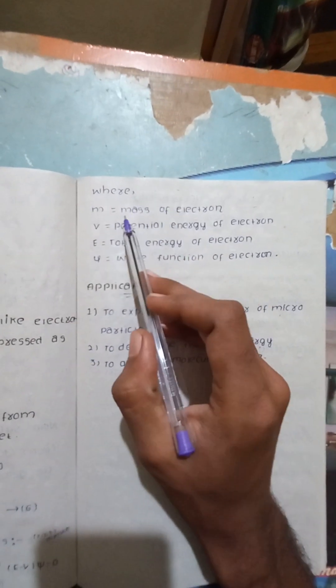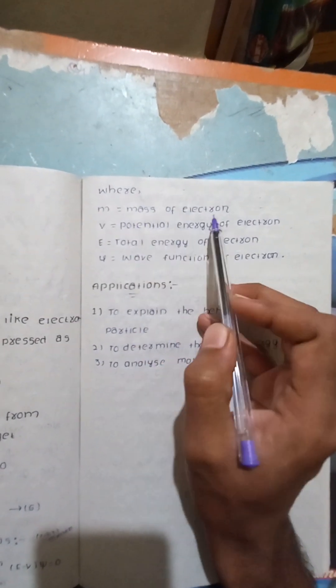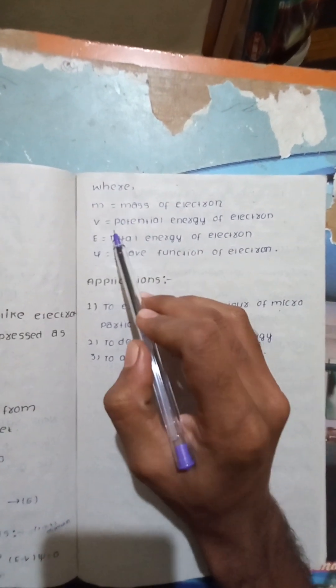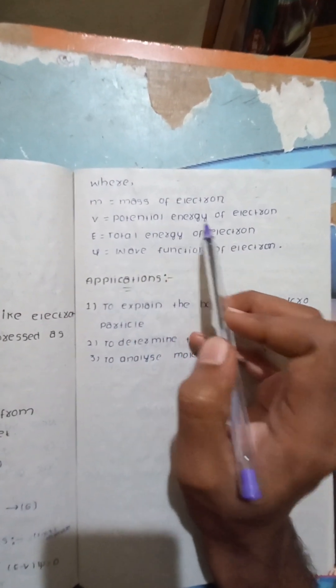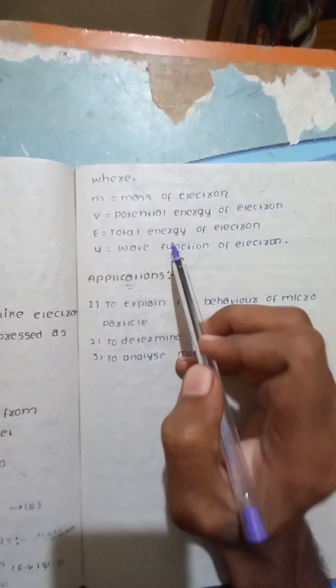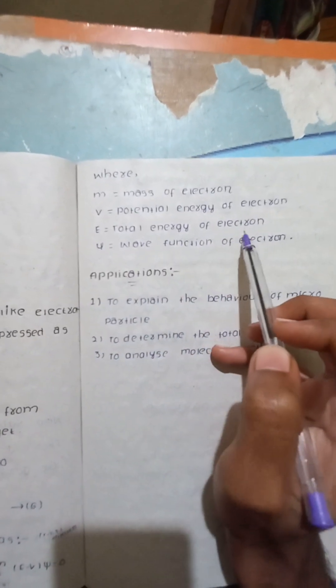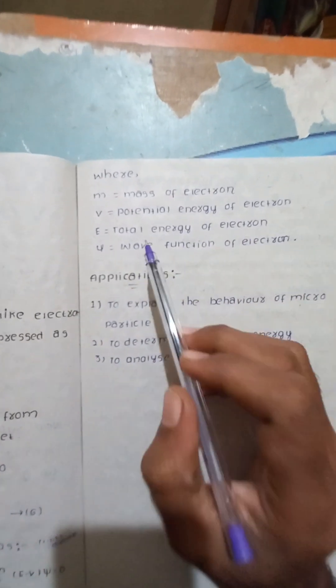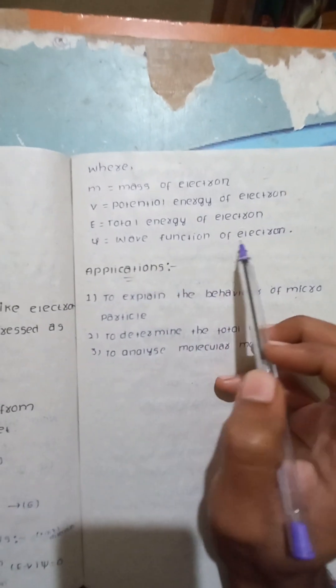Where: m = mass of the electron, V = potential energy of the electron, E = total energy of the electron, and ψ (psi) = wave function of the electron.